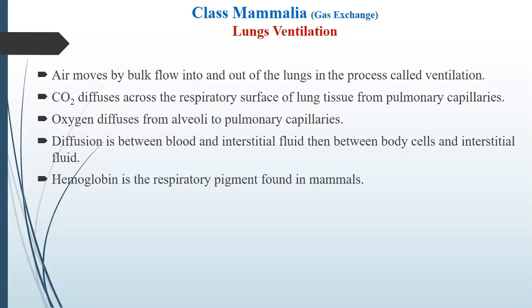Carbon dioxide diffuses across the respiratory surface of lung tissue from the pulmonary capillaries. Oxygen diffuses from the alveoli into the pulmonary capillaries. So carbon dioxide moves from the capillaries into the respiratory surface and lung tissues, and oxygen diffuses from the alveoli into the pulmonary capillaries. Diffusion also occurs between blood and interstitial fluid, and then between body cells and interstitial fluid.